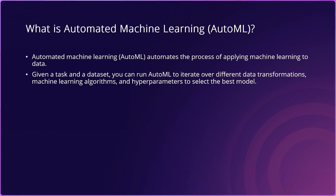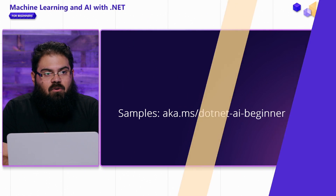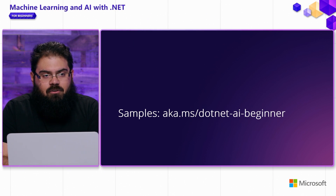Automated machine learning can help you here. Automated machine learning, or AutoML, automates the process of applying machine learning to your data. Given a task and a dataset, you can run AutoML to iterate over the different data transformations, machine learning algorithms, and hyperparameters in order to find the best model for your dataset. Thinking back to that machine learning training workflow, you still start out with defining a problem and a dataset, but AutoML replaces those other steps of choosing your algorithm, tuning the hyperparameters, and evaluating to find the best model. Any samples can be found at aka.ms/dotnet-AI-beginner.